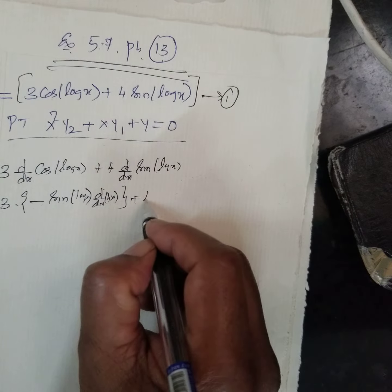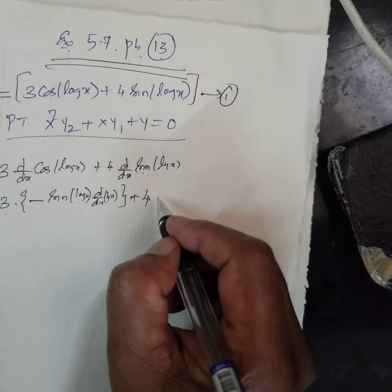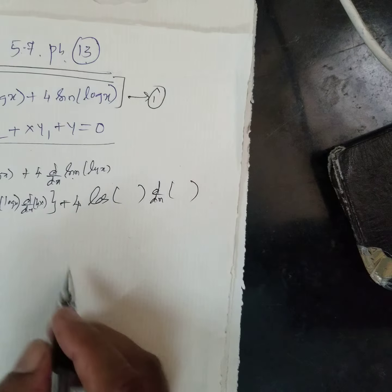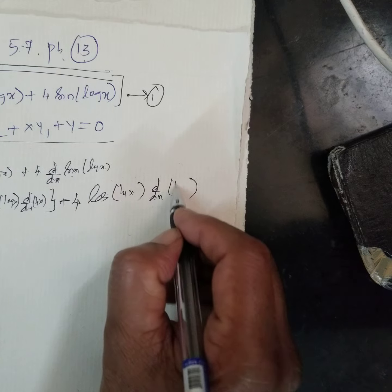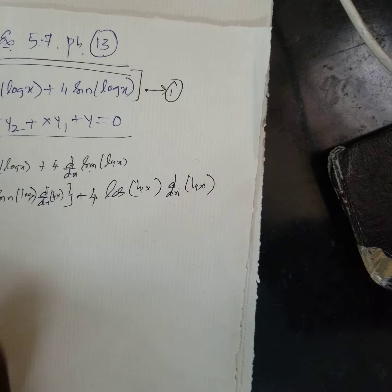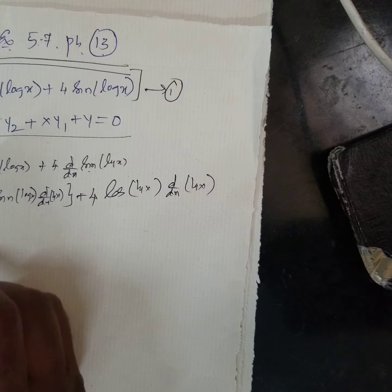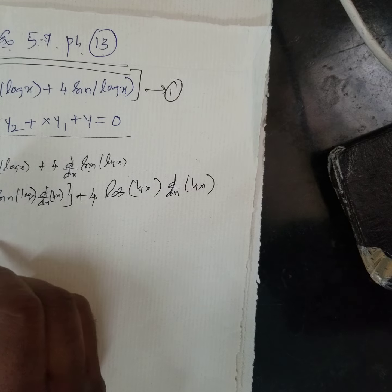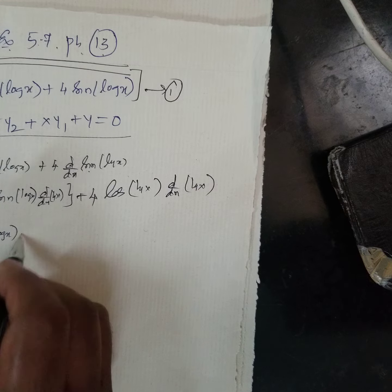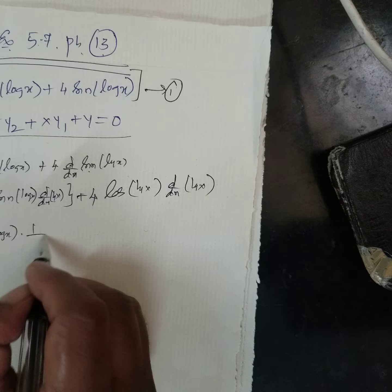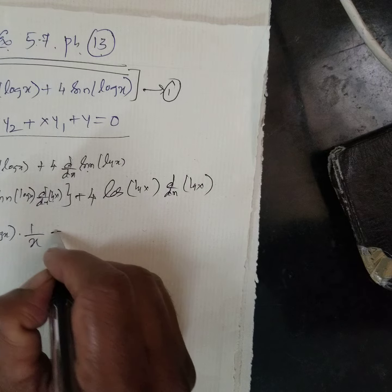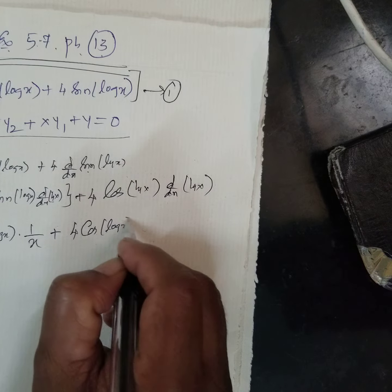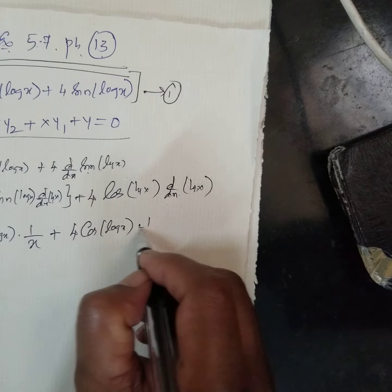Similarly here, 4, differential coefficient of sin is what, cos box into differential coefficient of that box. Box consists of log x. Now, 3, this minus comes out, sin log x, plus, differential coefficient of log x is what, 1 by x, plus 4, cos log x, differential of log x is what, 1 by x.